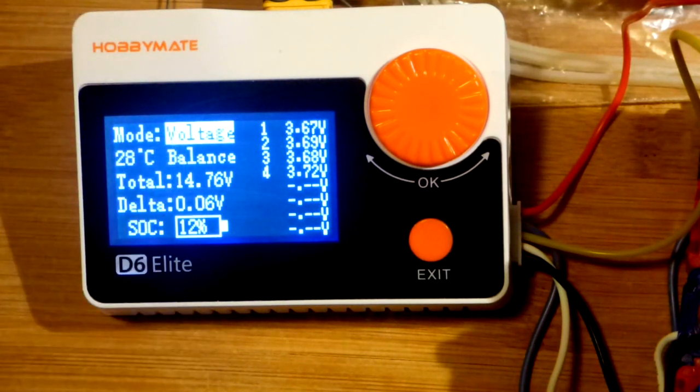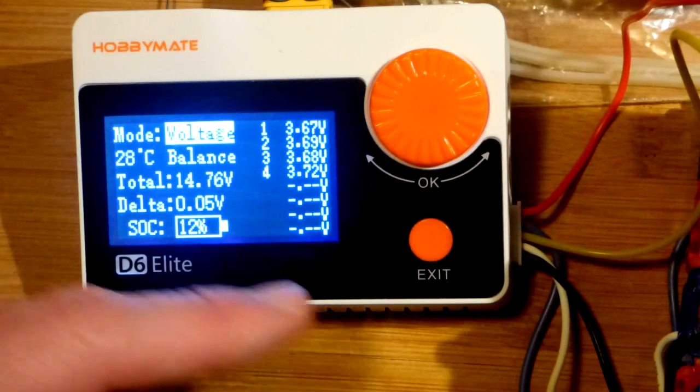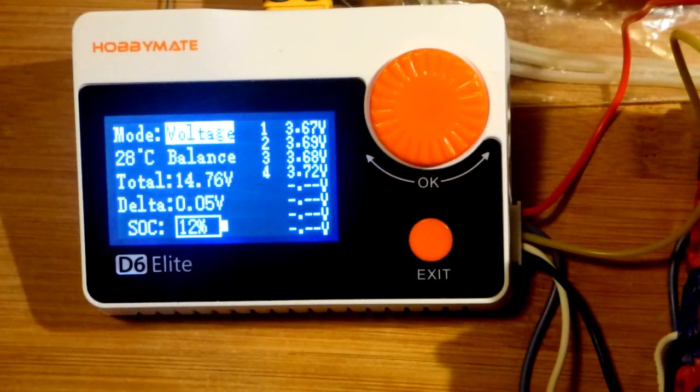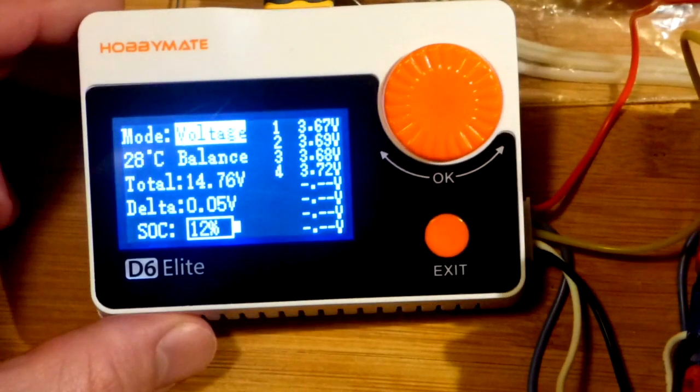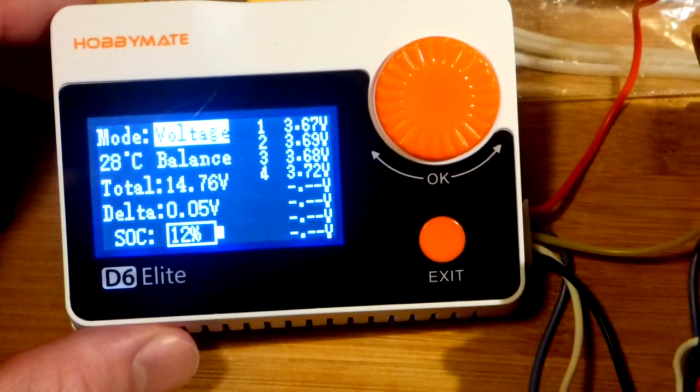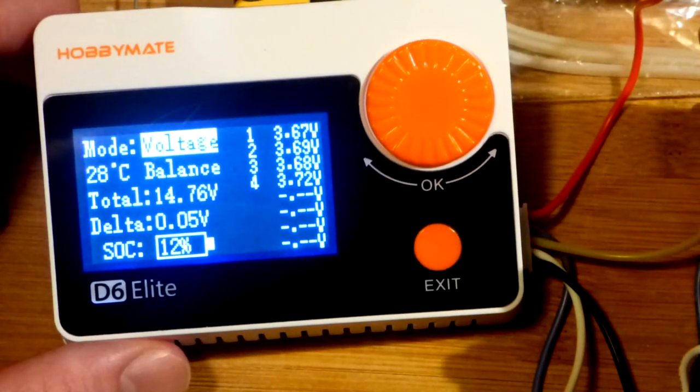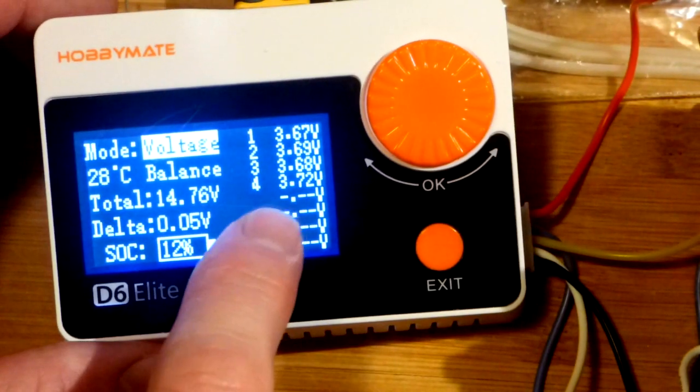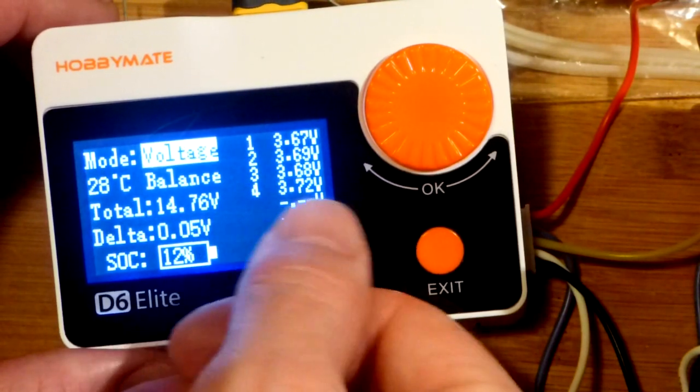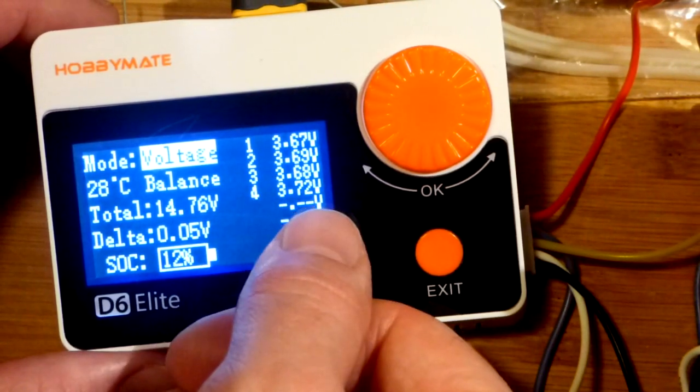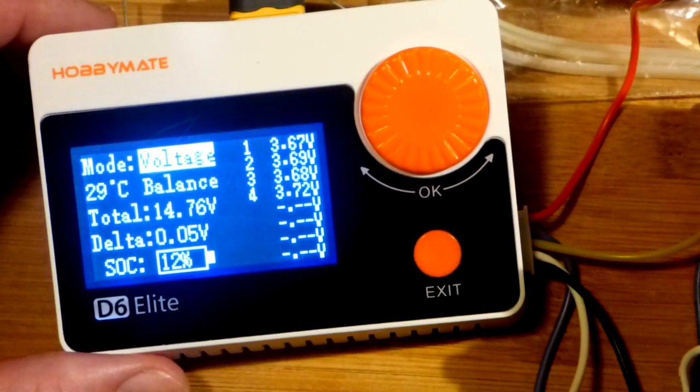So now we're looking at voltage and state of charge. It says 12%. When we charge all of these to 4.2 volts, it will say 100%. But there you can see the individual voltages. So there's four series connections.